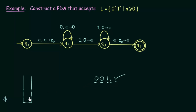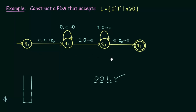One thing to notice: this is a non-deterministic pushdown automata. In deterministic finite automata, every state must have exactly one transition for each input. In non-deterministic finite automata, a state may or may not have a transition on particular inputs and may have more than one. If you look carefully here, some states have no transition for some input symbols — so this is a non-deterministic pushdown automata.